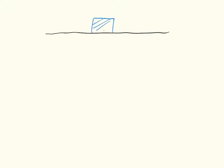Here's a quick example of how we can apply Newton's second law. We have a box with a mass of 10 kilograms, and we are pulling that box with a force of 80 newtons. Our job is to figure out what the acceleration of that box is.